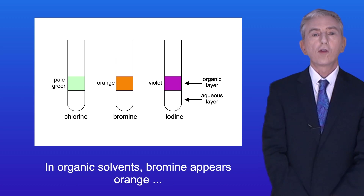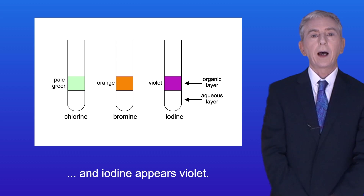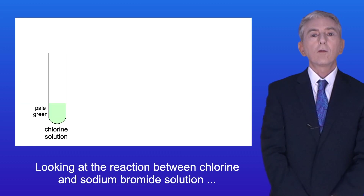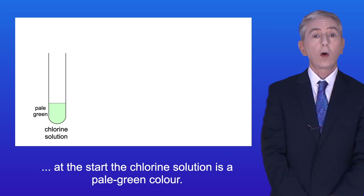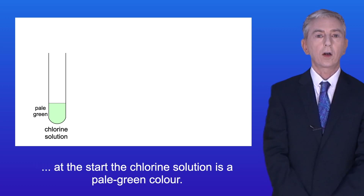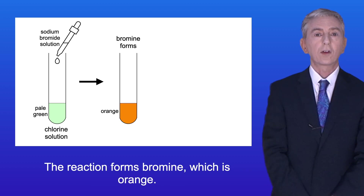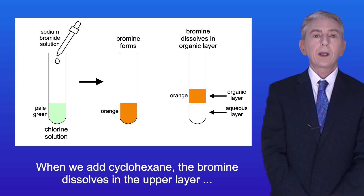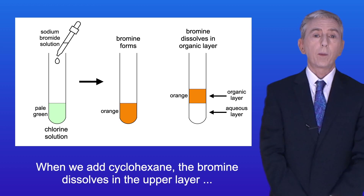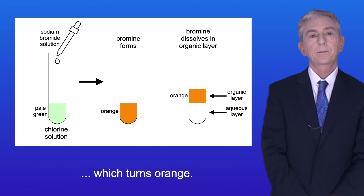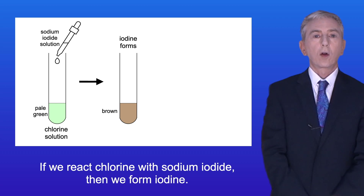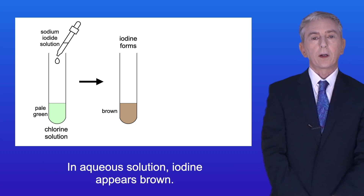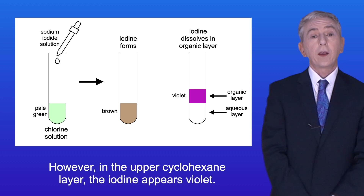In organic solvents bromine appears orange and iodine appears violet. Looking at the reaction between chlorine and sodium bromide solution: at the start the chlorine solution is a pale green color, the reaction forms bromine which is orange, and when we add cyclohexane the bromine dissolves in the upper layer which turns orange. If we add chlorine with sodium iodide then we form iodine - in aqueous solution iodine appears brown, however in the upper cyclohexane layer the iodine appears violet.